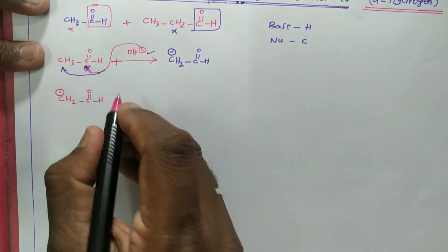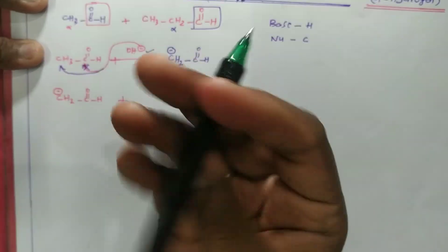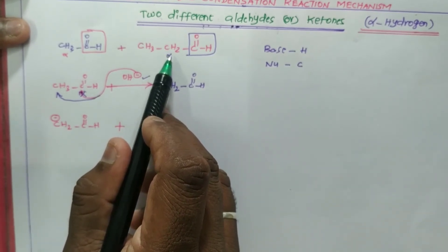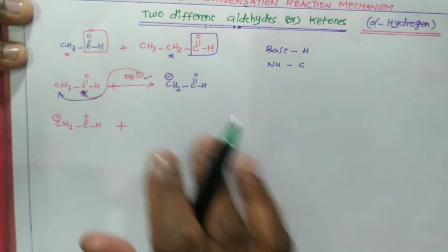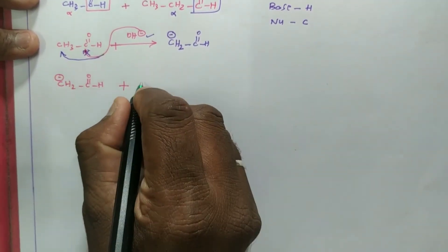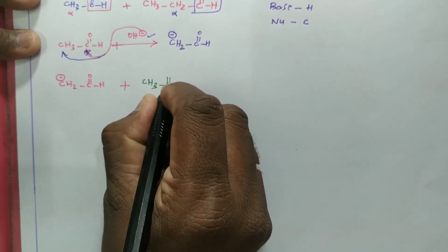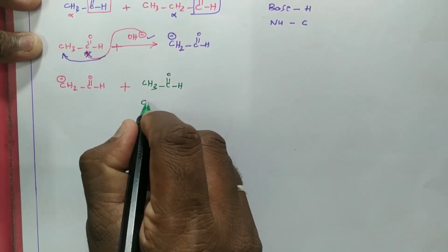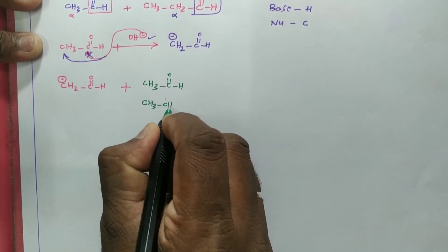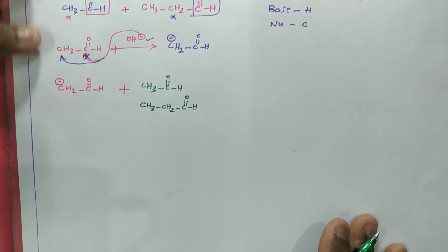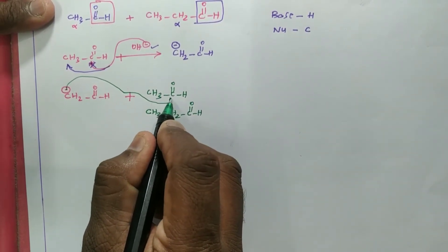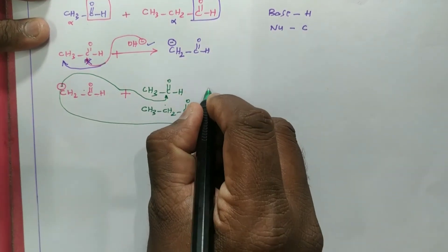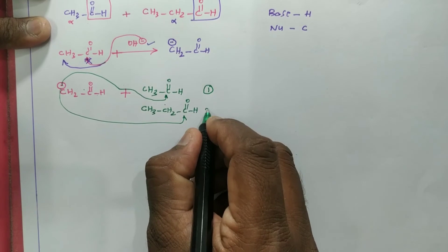This nucleophile can attack both possible electrophiles. It can react with the first molecule (ethanal, CH₃CHO) or it can react with the second molecule (propanal, CH₃CH₂CHO). If it reacts with the first molecule, we get product number one. If it reacts with the second molecule, we get product number two.